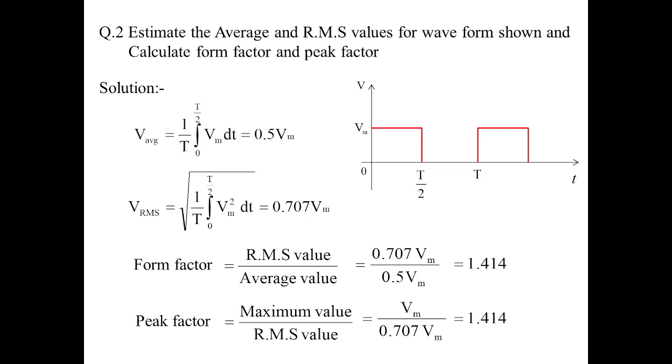For a pulse waveform with pulse on and pulse off conditions, the form factor value will be 1.414 and peak factor value will be 1.414. So it is a special case — for pulse on, pulse off conditions the form factor and peak factor always remain like this. It is a simple problem and you can verify it mathematically.